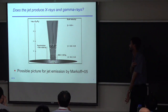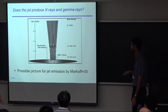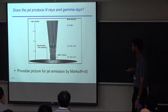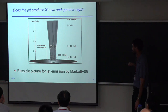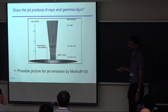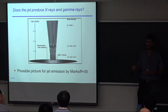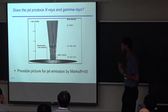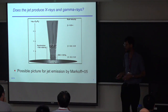Now the question: does the jet produce X-rays and gamma rays? This picture was put together by Sarah Markoff, a theorist in Amsterdam. The idea is that you've got a jet — the radio is due to synchrotron from the outer part of the jet, but in this model she has X-ray emission coming from the base of the jet due to synchrotron self-Compton. Synchrotron self-Compton means you have high-energy electrons that upscatter the synchrotron photons by Compton scattering and get higher-energy emission. So you can get X-rays in this model from the base of the jet.